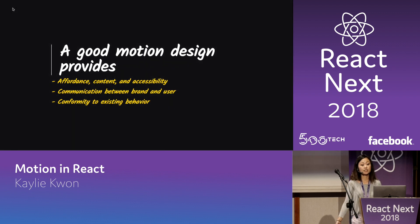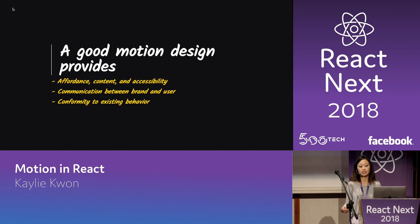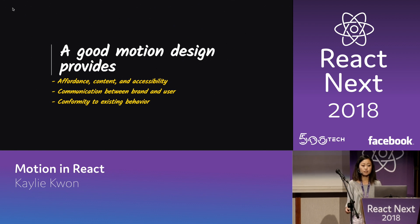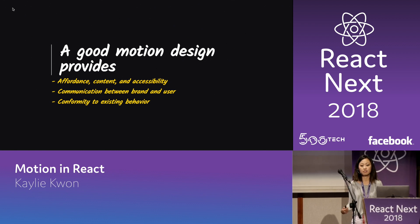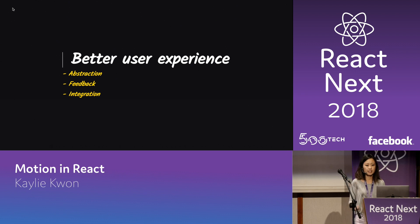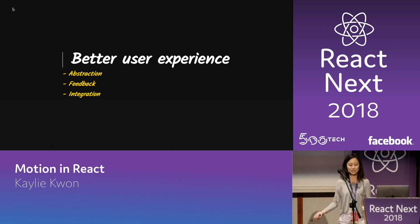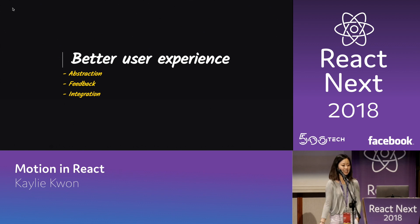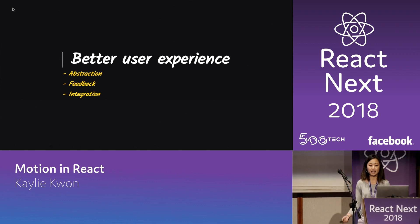Good motion design provides affordance, context, and accessibility by connecting the user to the brand and what it's trying to communicate. It also conforms to native and existing behavior, which becomes critical on platforms like mobile. So both things have this commonality — we want better user experience. Developers are users too. And we want to focus on three things: abstraction, feedback, and integration.